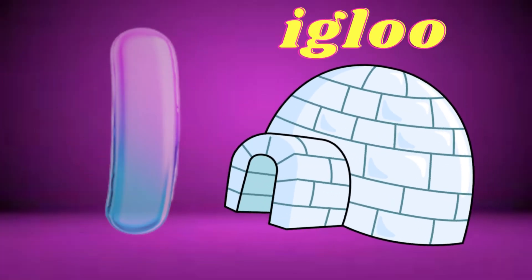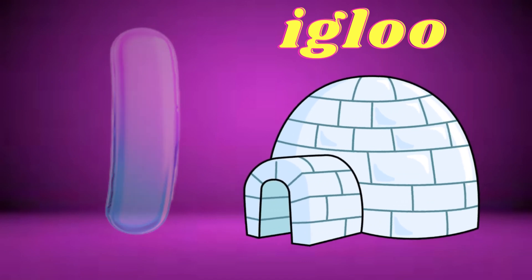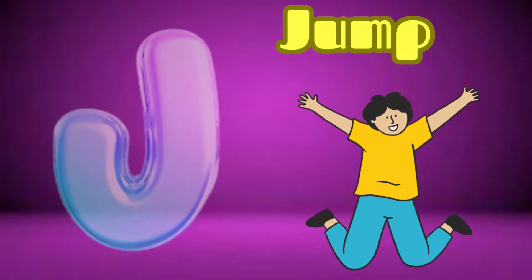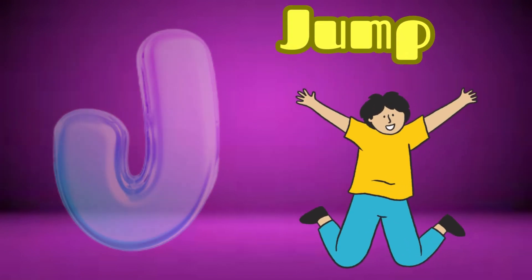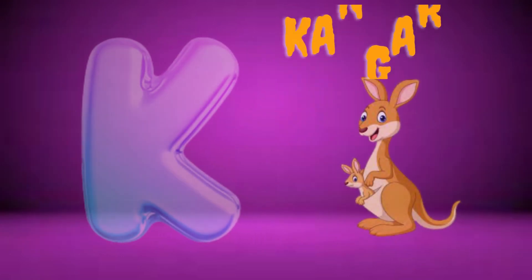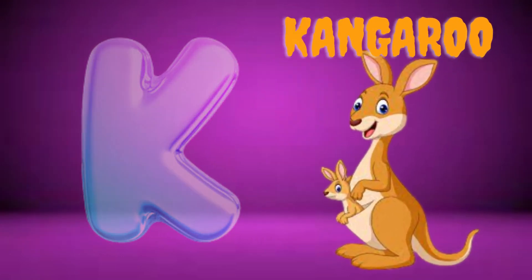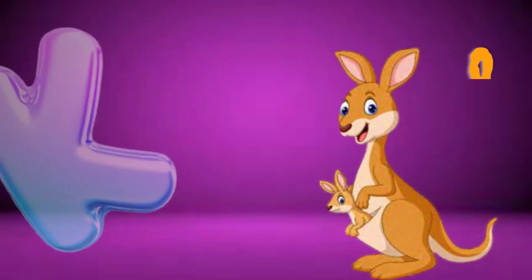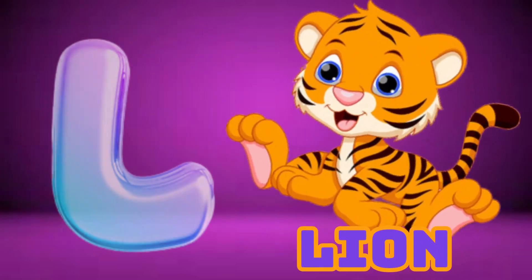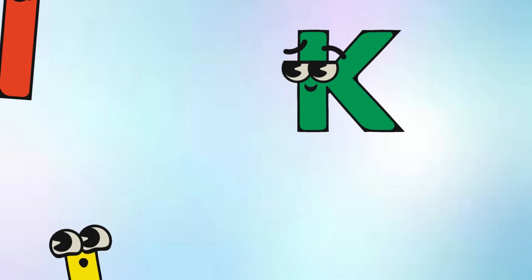I is for Igloo, I-I-Igloo. J is for Jump, J-J-Jump. K is for Kangaroo, K-K-Kangaroo. L is for Lion, L-L-Lion.